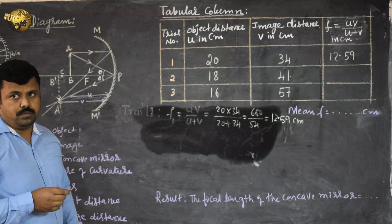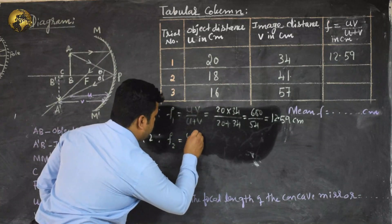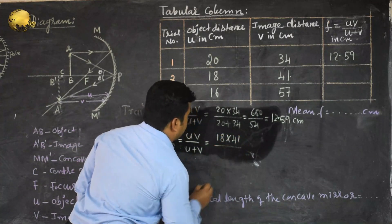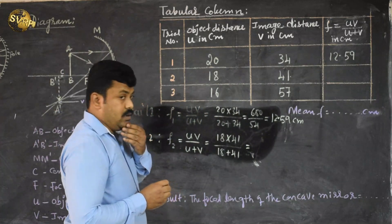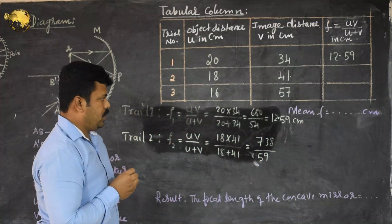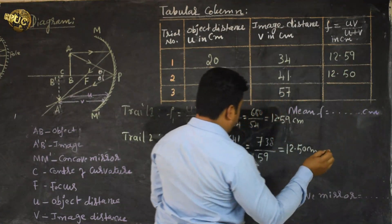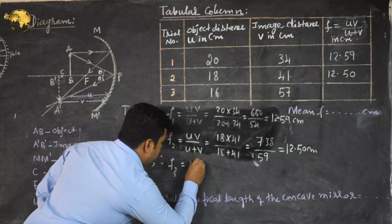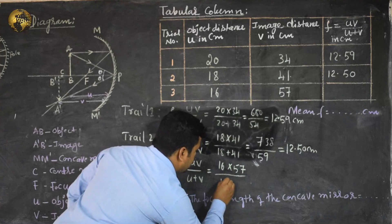For trial number 2, F2 equals UV divided by U plus V, which is 18 multiplied by 41 divided by 18 plus 41. That gives 738 divided by 59. For trial number 3, F3 equals UV divided by U plus V, which is 16 multiplied by 57 divided by 16 plus 57.